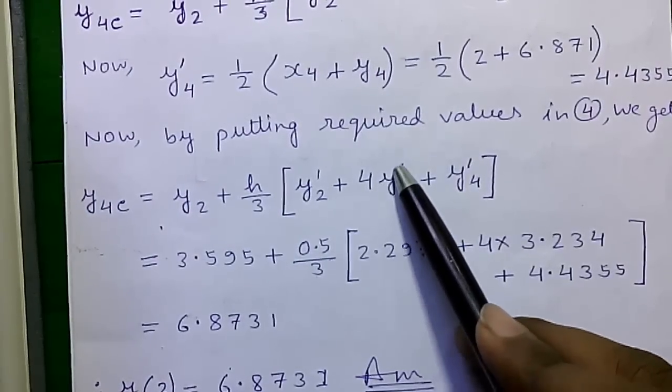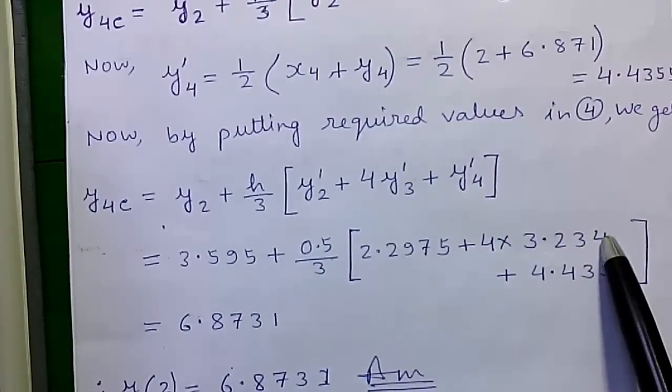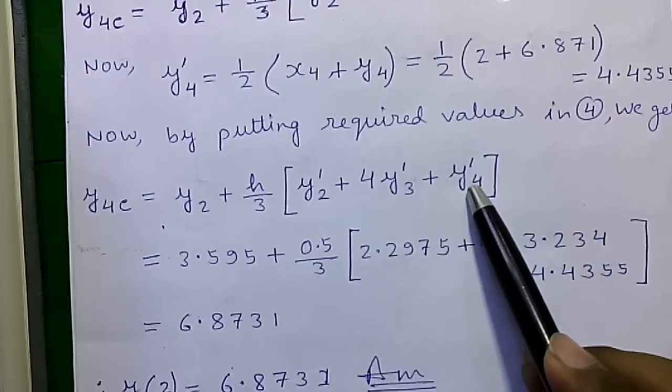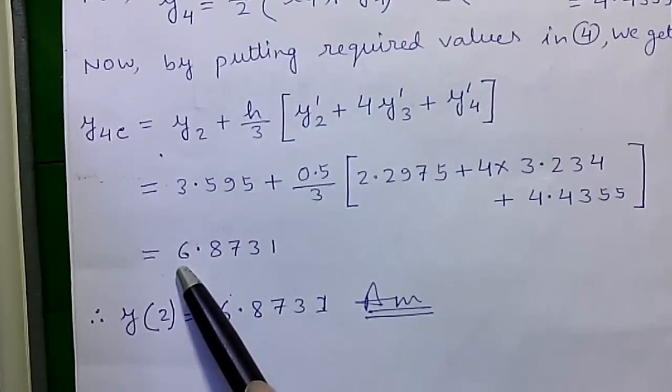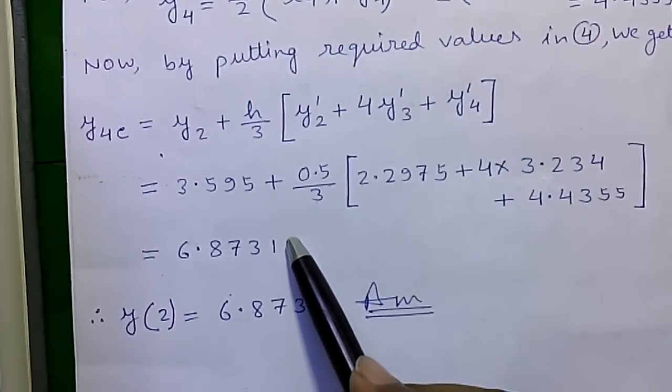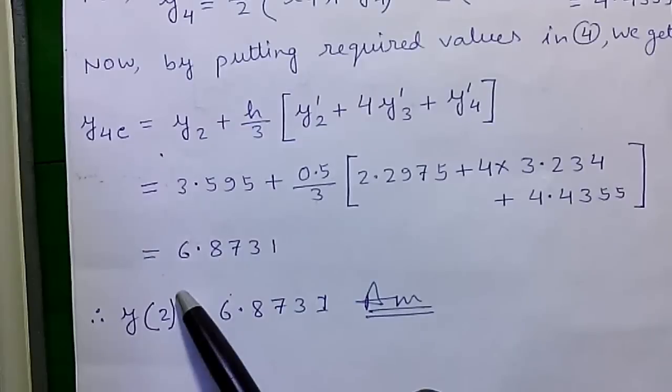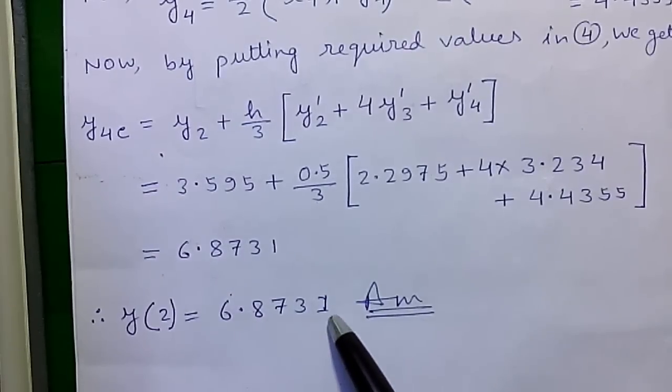This value plus 4 times y'(3) value this value plus y'(4) value this value. So we will get 6.8731. So y(2) equals 6.8731. This is our required answer.